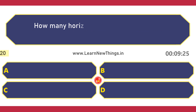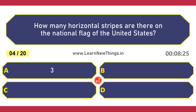How many horizontal stripes are there on the national flag of the United States? Thirteen.